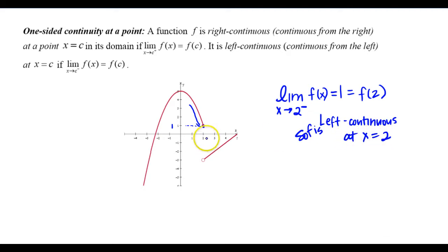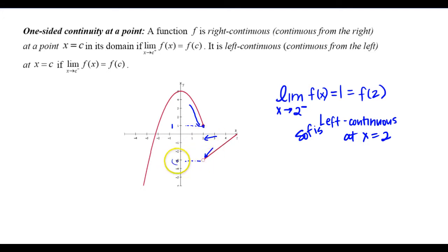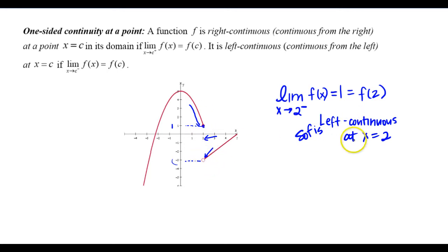But looking at what's happening from the right side of 2: as I approach 2 from the right, my limit from the right is going to be negative 3. The limit value doesn't equal the function value — the function value is up at 1, so f is left continuous at x equals 2, but not right continuous.